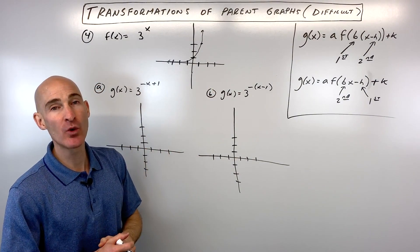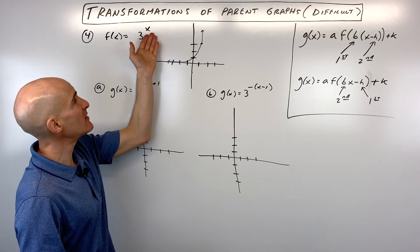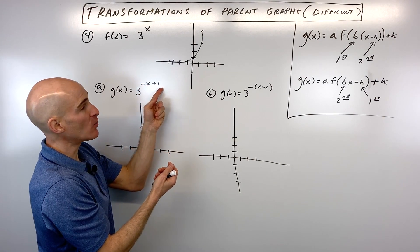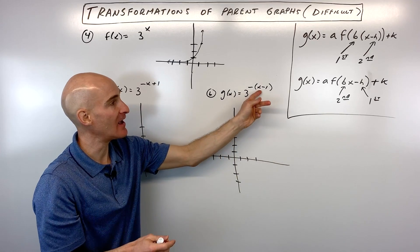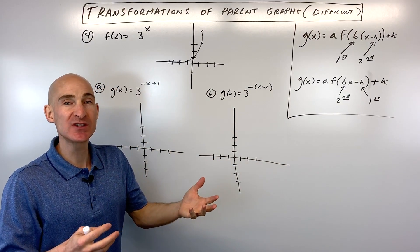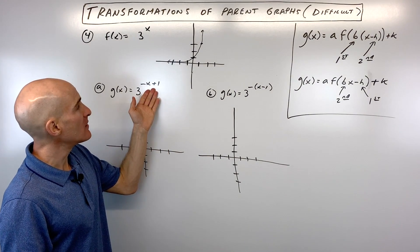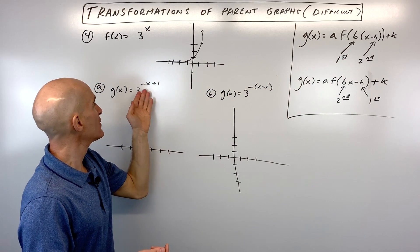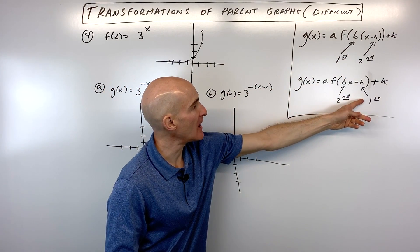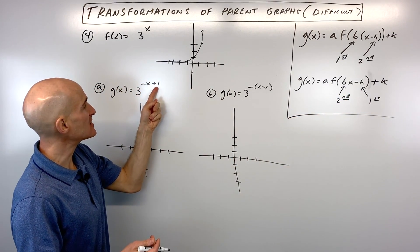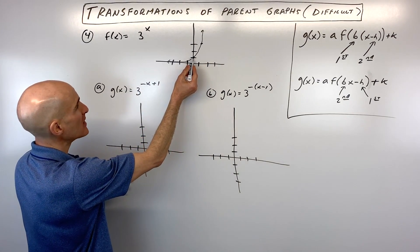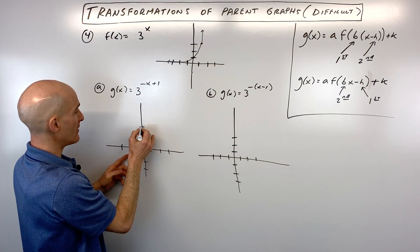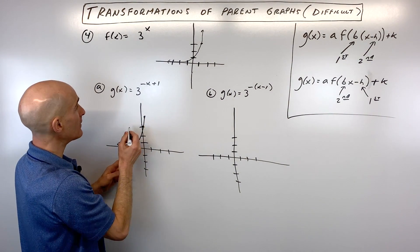This example covers reflections using f(x) = 3^x, an exponential growth function. We'll compare version A: 3^(−x + 1) and version B: 3^(−(x − 1)). In version A the negative is not factored out, so we're in the second form — we do the horizontal shift first. The plus 1 shifts the graph left 1, moving all key points left by 1.